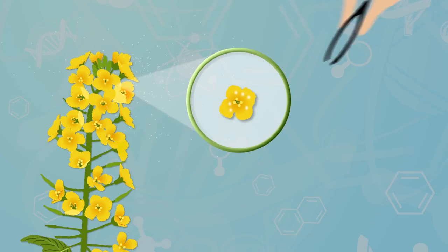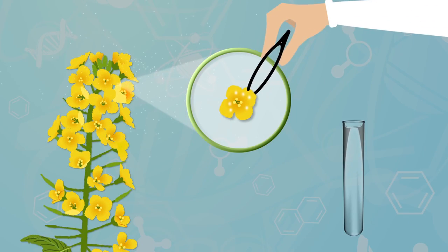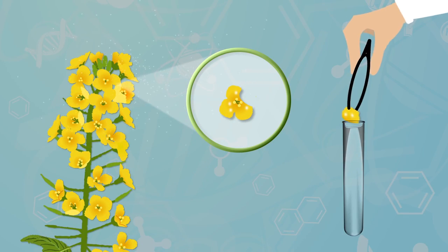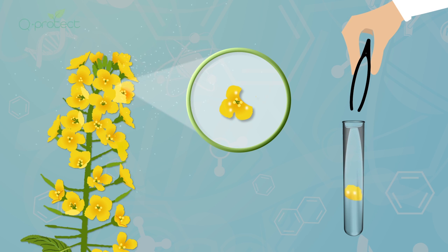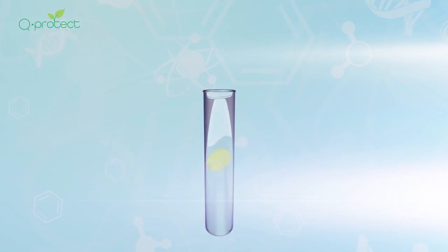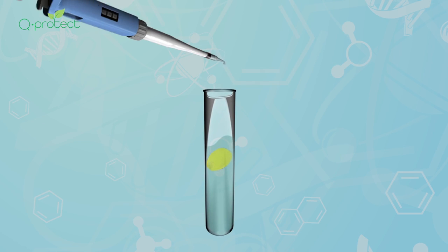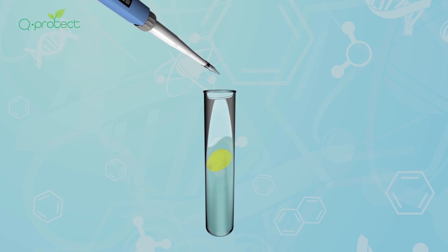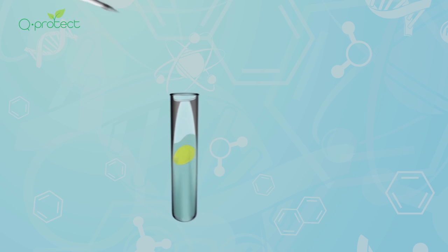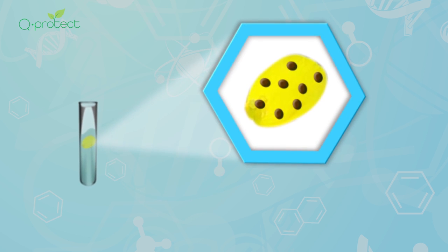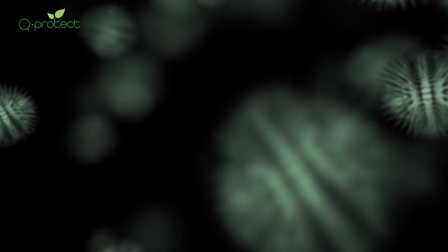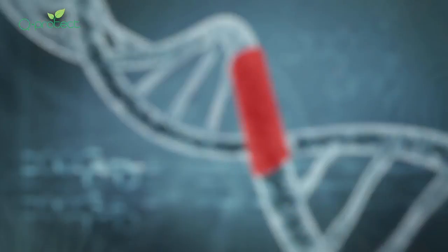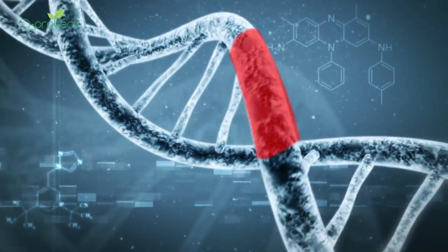Q-Protect involves collecting petal samples from different areas of your field and sending them to the lab, where they determine if spores are present or not on the petals. The lab can detect a DNA target specific to the fungal spores when they are present, or none will be detected when fungal spores are not present on the petals.